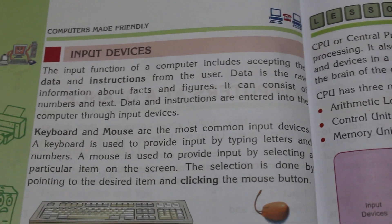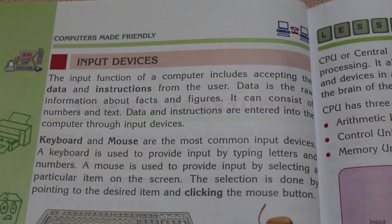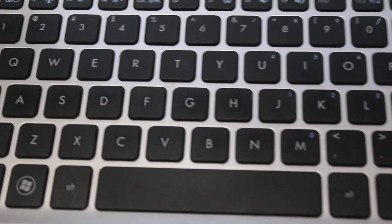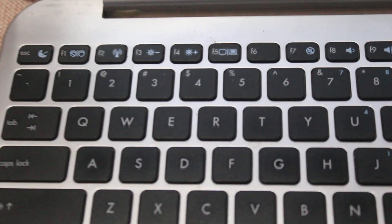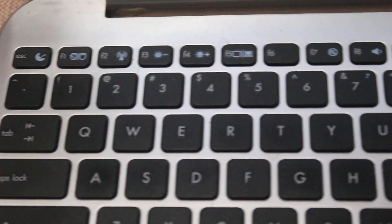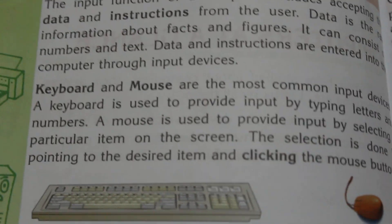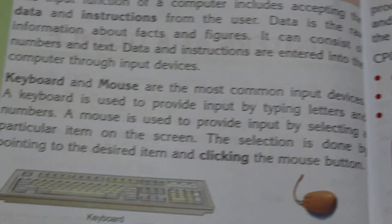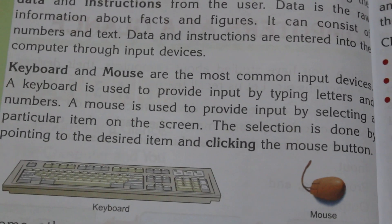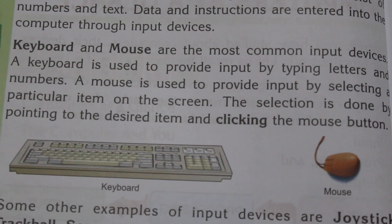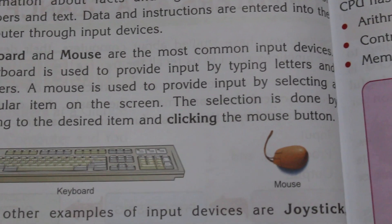The keyboard and mouse are the most common input devices. The keyboard is used to provide input by typing letters and numbers — on my laptop you can see letters like A, S, D, F, G, H and numbers one through nine and zero. A mouse is used to provide input by selecting a particular item on the screen by pointing to the desired item and clicking the mouse button.